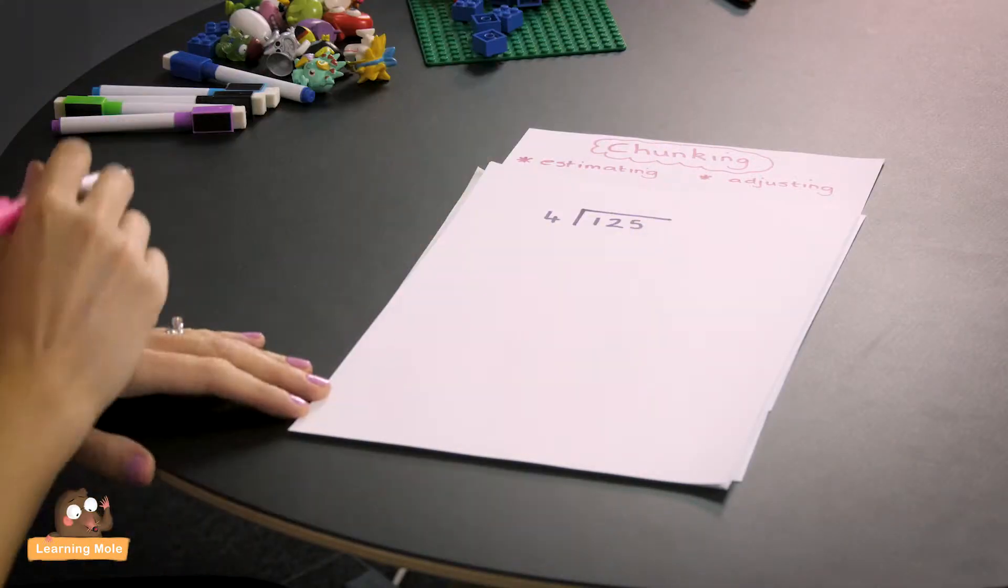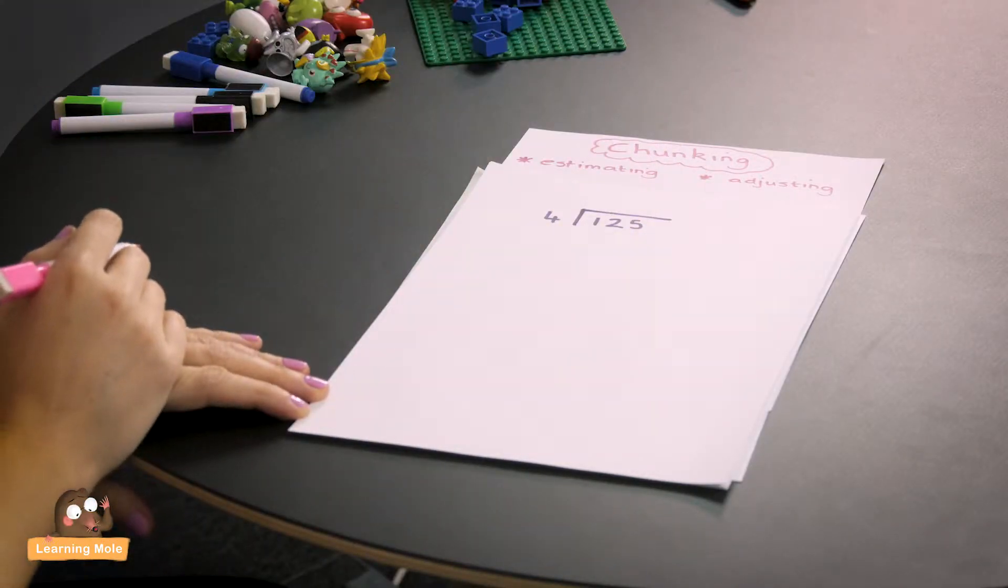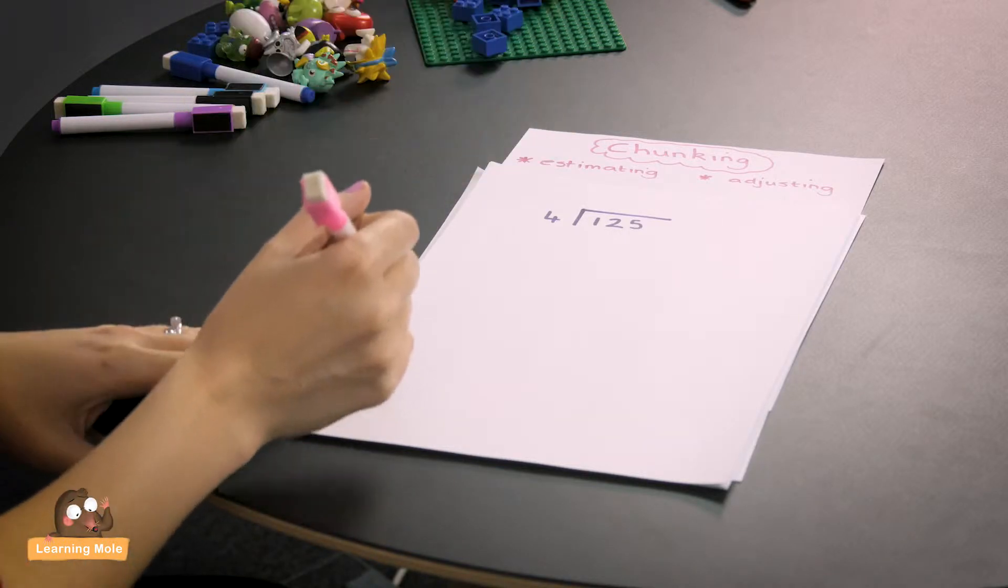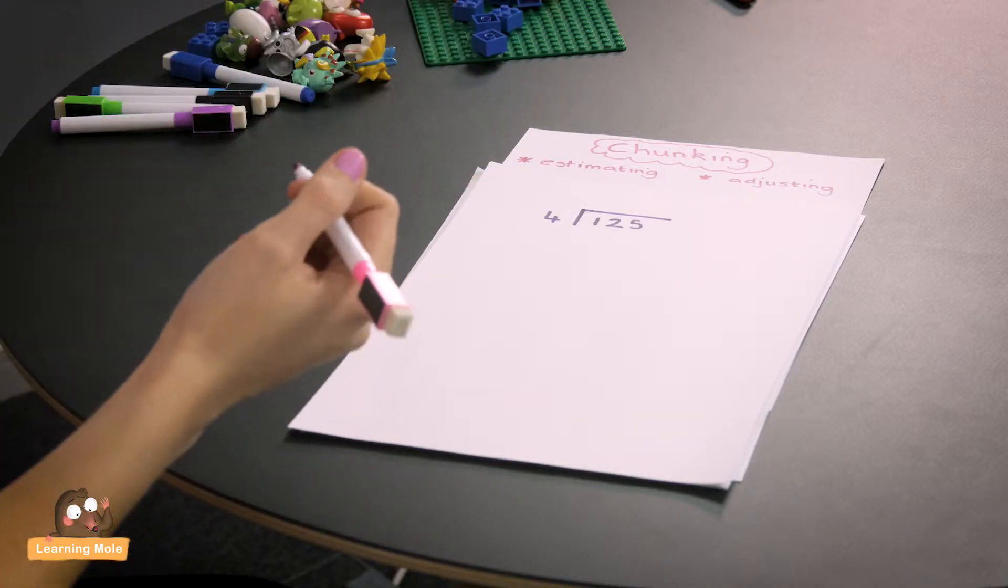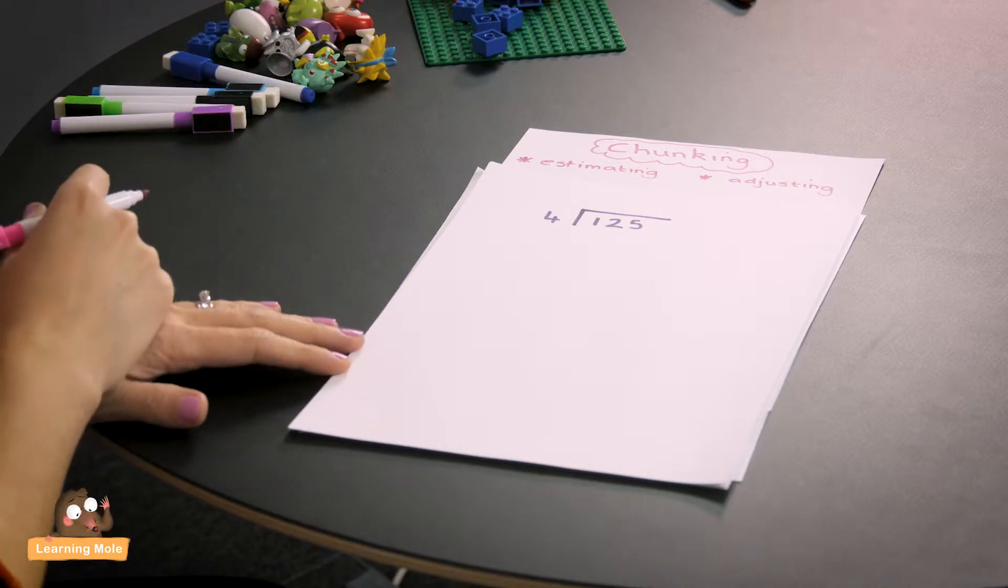Now we did talk about the idea of chunking, taking a big bit away rather than taking just take away 4, take away 4. So here I've got my calculation which is 125 divided by 4. I could just do take away 4, take away 4 and then see how many times I did that. That would take a very long time.